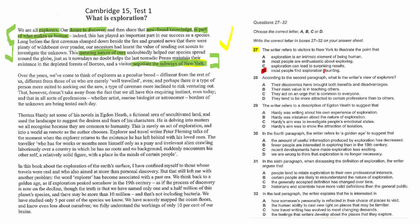Now rule out options. Option D mentions 'daunting' — the passage says nothing about that. Option B says 'most people,' but the passage says 'all people' — 'we are all explorers.' Option C mentions 'surprising results,' but there's no suggestion of surprise. Option A remains — 'intrinsic element of being human' — which aligns perfectly with the gist. Option A is correct.